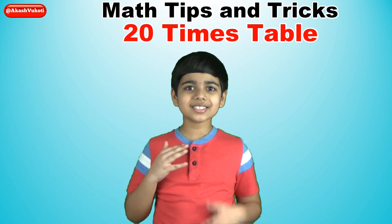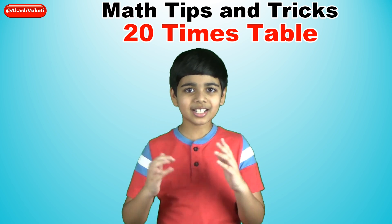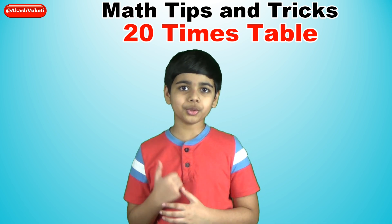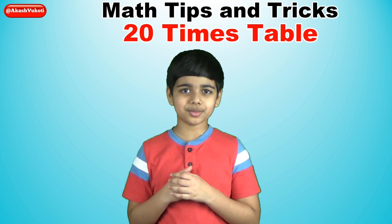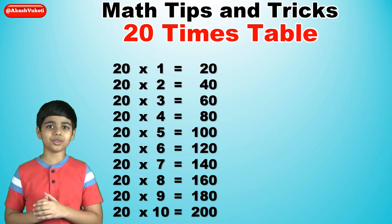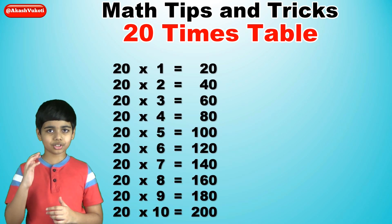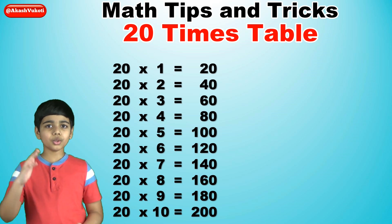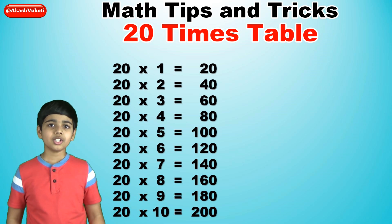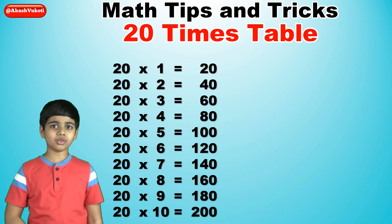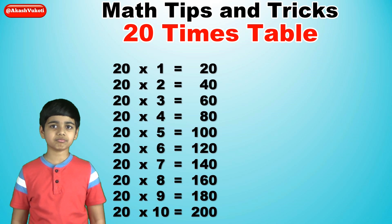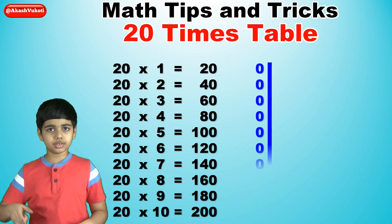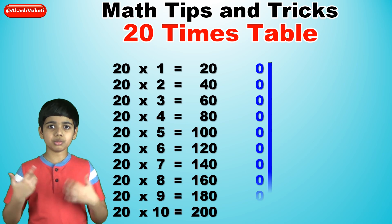Hello friends, I'm Akash. Today I'm going to talk about the trick for the 20 times table. We can begin learning this trick to memorize the 20 times table. First, for the 1s digits, we'll just write 0s the whole way through: 0, 0, 0, 0, 0, 0, 0, 0, 0, 0, 0.